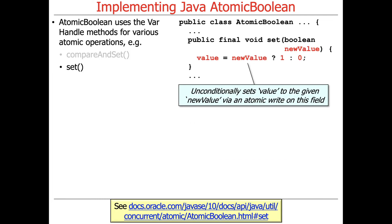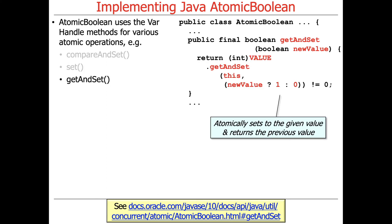Here's how AtomicBoolean implements set: all it does is atomically set the value to 1 if newValue is true, otherwise to 0 — unconditionally setting it to the new value. The key thing to note is that value is volatile, and therefore that write operation is atomic. For getAndSet, we say varHandle value dot getAndSet — that's a VarHandle method — passing this object and 1 if newValue is true, otherwise 0. So we read the old value and set it to the new value, either true or false.